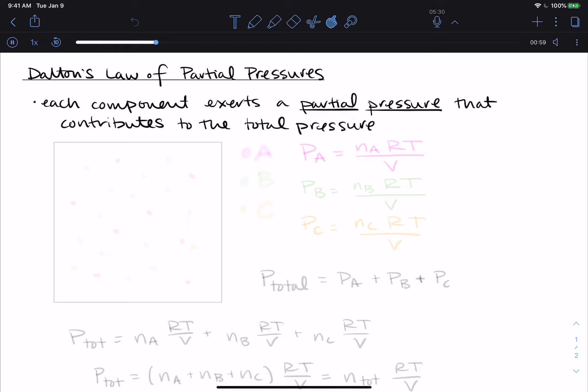So as an example of what this might look like, if we had some container, try to make it a pretty big container, and in this container we have three different gases. So we'll do these pink dots and all of the pink dots we'll call gas A, and some green dots and all of the green dots we'll call gas B, and we'll just do one more for good measure. Let's do some orange and we'll call those C.